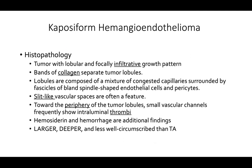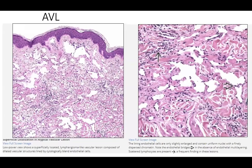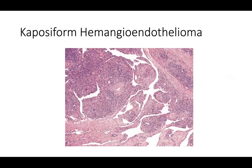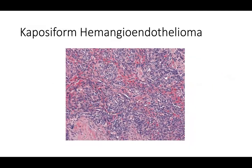Towards the periphery of the tumor lobules you'll find small vascular channels that frequently show intraluminal thrombi. Hemosiderin and hemorrhage are additional features. Kaposiform hemangioendothelioma is distinguished from tufted angioma by being larger, deeper, and less well-circumscribed. At low power the image is more diffuse, at high power the lobules are less discrete, and you'll have more slit-like spaces with more intraluminal thrombi. As intraluminal thrombi form, erythrocytes change from dark red to a more homogenous smeared red and then pinkish color resembling collagen.